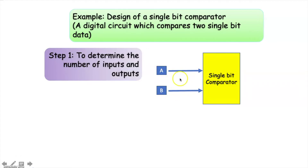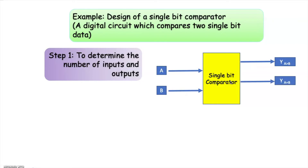Since this is a comparator circuit, this circuit must be able to tell us whether A is greater than B, or B is greater than A, or A is equal to B. That is why this circuit needs three outputs which can indicate whether A is greater than B, A is equal to B, or A is less than B. So this circuit will have two inputs and three outputs.